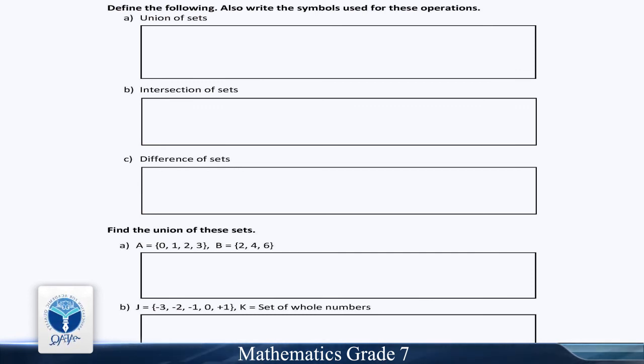Find the union of these sets. Part A: A is equal to 0, 1, 2, 3. B = 2, 4, 6. Part B: J is equal to minus 3, minus 2, minus 1, 0, plus 1. K is equal to set of whole numbers.